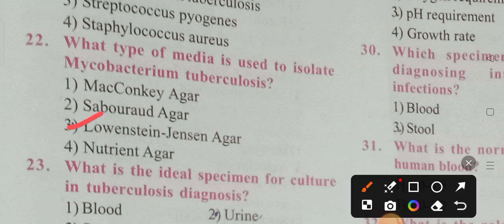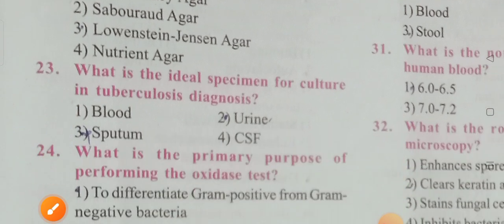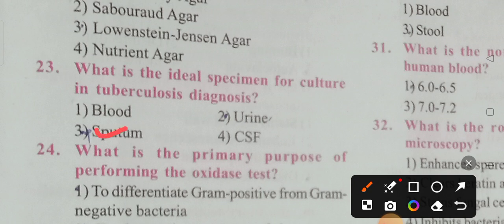What is the ideal specimen for culture in tuberculosis diagnosis? Options: urine, CSF, sputum. Option 3 is the correct answer — sputum is the ideal specimen for culture in tuberculosis diagnosis.